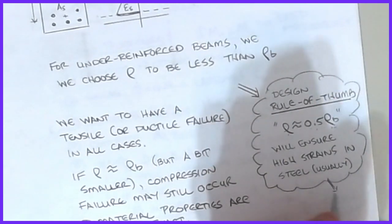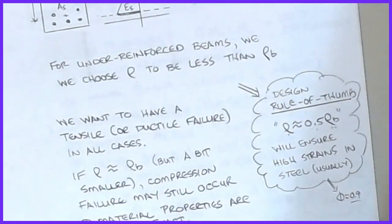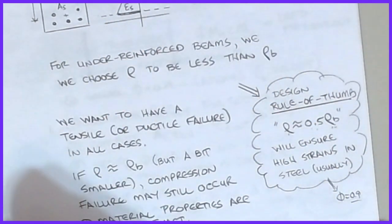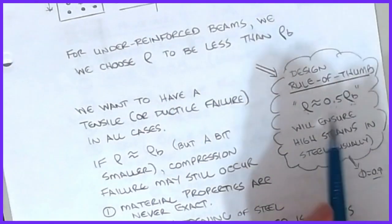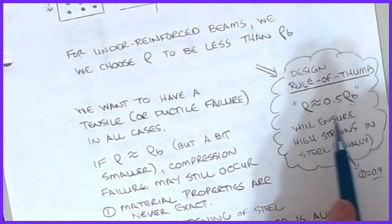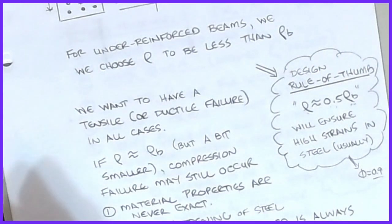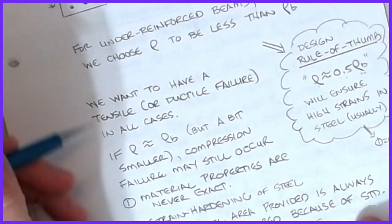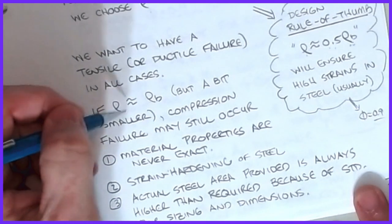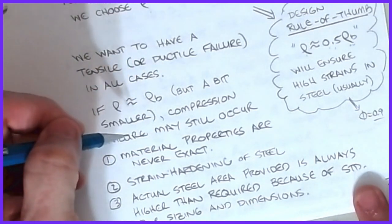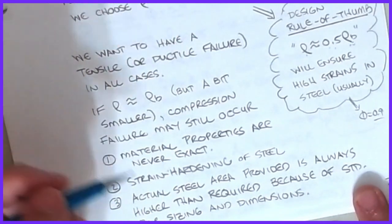Using rho = 0.5 * rho_balanced is still a very good rule of thumb today. In a design problem, choosing this value almost always lets you assume phi = 0.9 right off the bat. It's a powerful technique for getting a feel for how much steel is needed and whether the section is the right size. You won't find this explicitly in the textbook or current ACI anymore, but it is a valid approach.